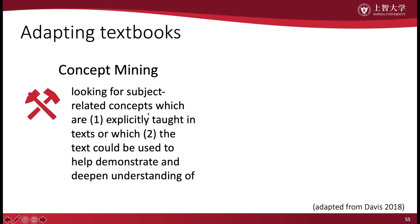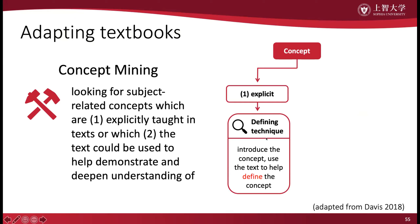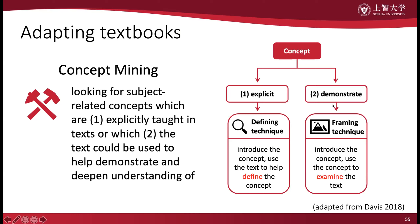The first way of doing this is by paging through the textbook and looking for concepts. If you find a concept, you ask yourself: does this concept belong to a specific subject? Look at it from the perspective of science, history, art, geography, maybe one of the social sciences. Using this defining technique, the textbook material mainly aids in the defining or understanding of the concept. The other method is to use the text to help demonstrate or deepen the understanding of a concept — using this framing technique, the textbook material is mainly used in a task where students must apply their understanding of the concept.